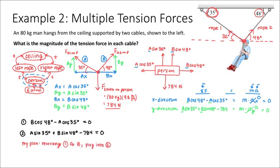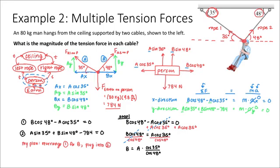I'll begin rearranging equation one by moving the A cosine 35 term to the other side, then dividing both sides by cosine 48. Because A is in the numerator on the right-hand side, I can factor it out, giving A multiplied by cosine 35 divided by cosine 48 degrees. Approximating cosine 35 over cosine 48 gives a value of 1.224, so B is equal to 1.224 times A. I can now plug this expression into my second equation.